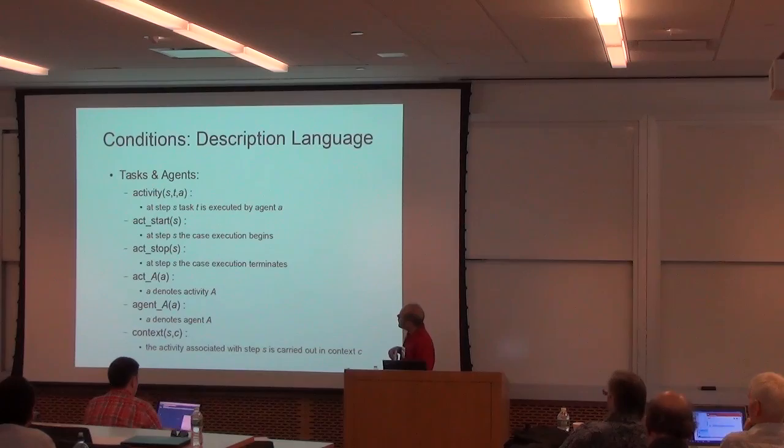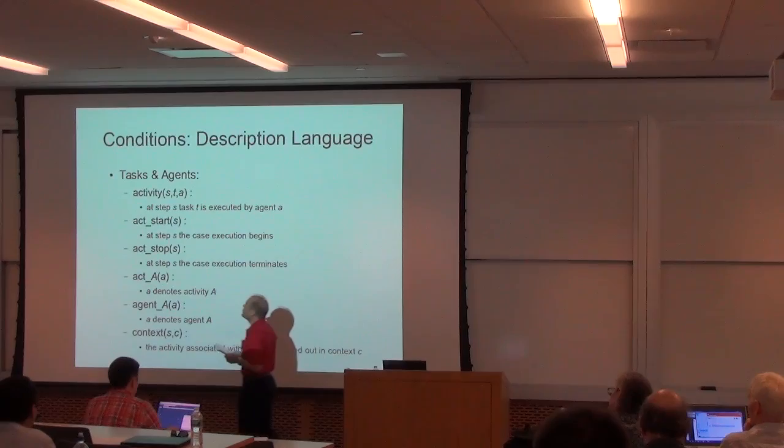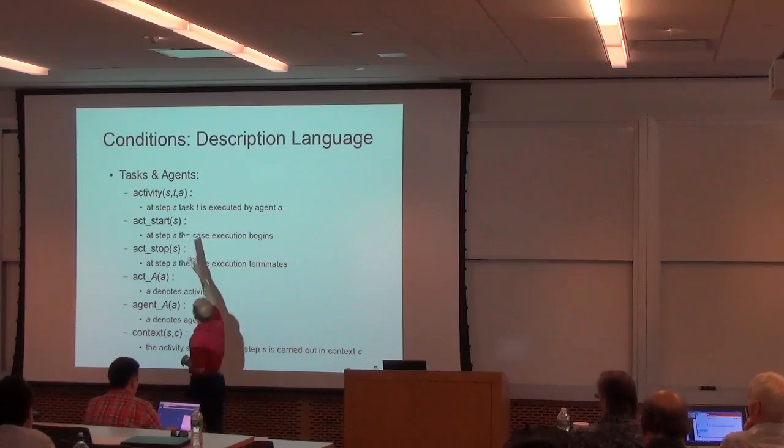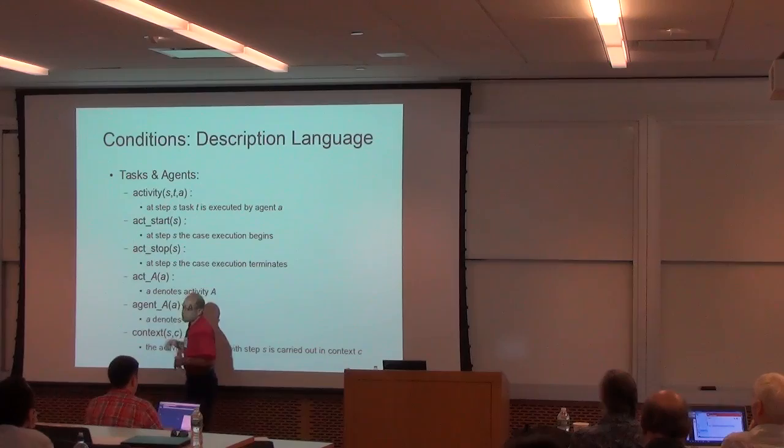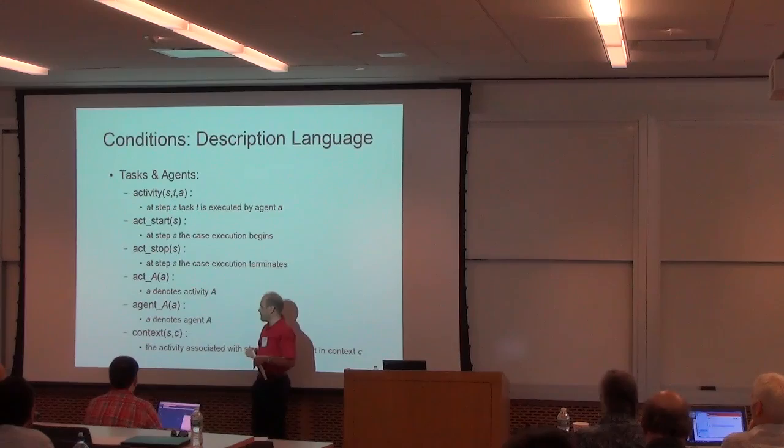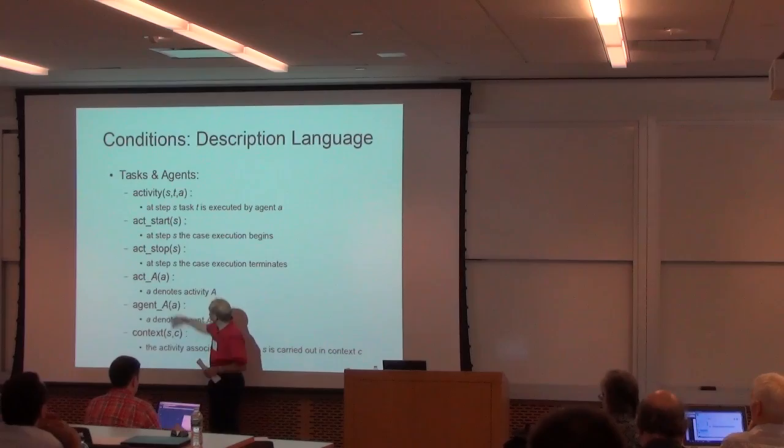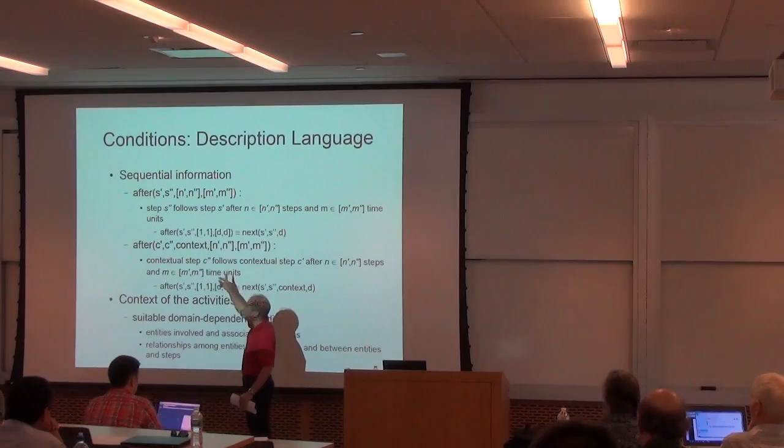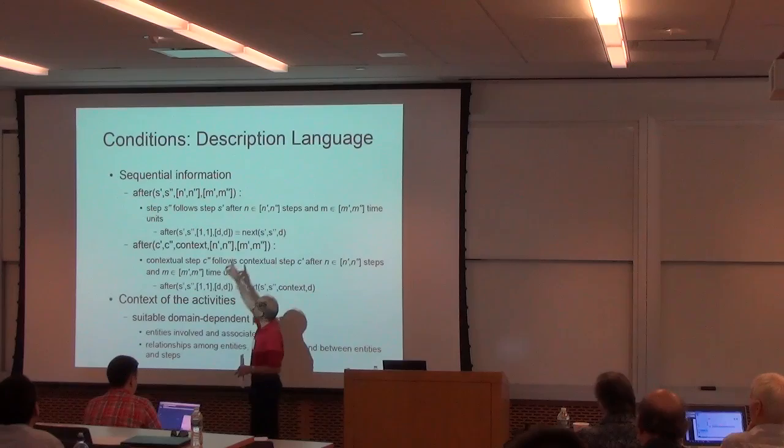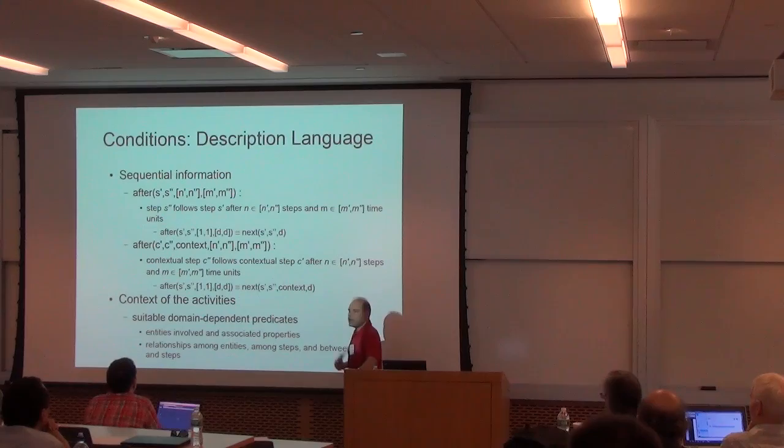This is the description language. In our rules we may describe the activities that take place along with the moment of the process in which they take place and the agent that executes those activities. We may identify the start and stop of the process. We have also other supporting predicates. We may say that a given activity step is executed in a given context, and we may say that activity steps or context steps follow each other within a given range of steps or of time points. And we can also use suitable domain-dependent predicates to express the context.